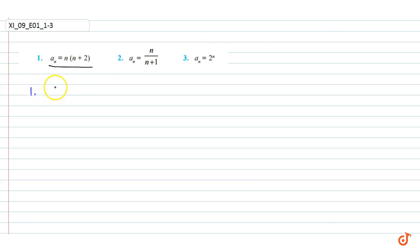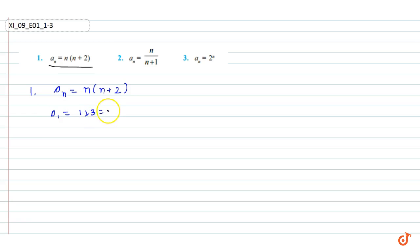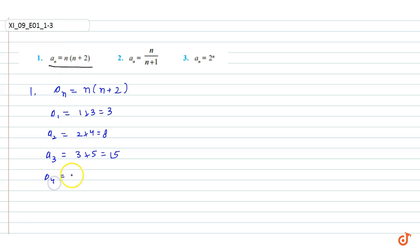For the first question, a_n = n(n+2). So a_1 = 1×3 = 3, a_2 = 2×4 = 8, and a_3 = 3×5 = 15. Then a_4 = 4×6 = 24.